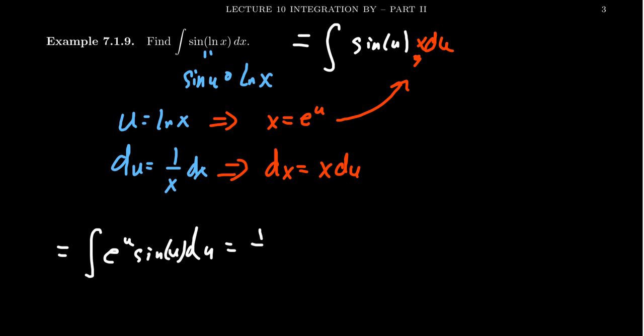But as a reminder, the antiderivative was one half e to the u times sine of u minus cosine of u plus a constant.